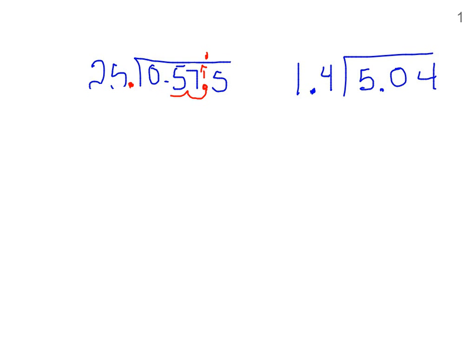Okay, so I'm going to erase this. I'll erase that decimal. And so I have 25 going into 57. That goes twice, which is 50. Subtracting, I get a 7.